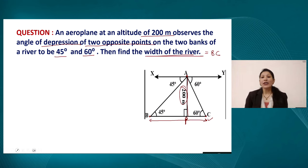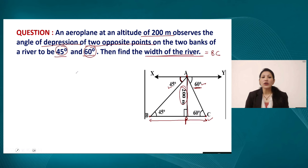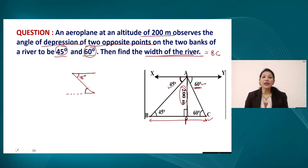From point A, if you are observing the first bank, the angle of depression is given as 45 degrees. For point C, the angle of depression is given as 60 degrees. Because the ground level is parallel to the eye level of the observer, and these two lines are parallel to each other, this base angle will also be 45 degrees due to alternate interior angles.